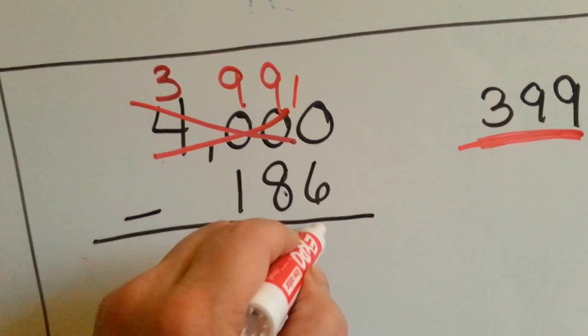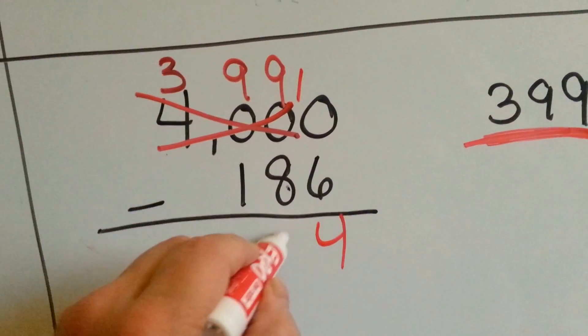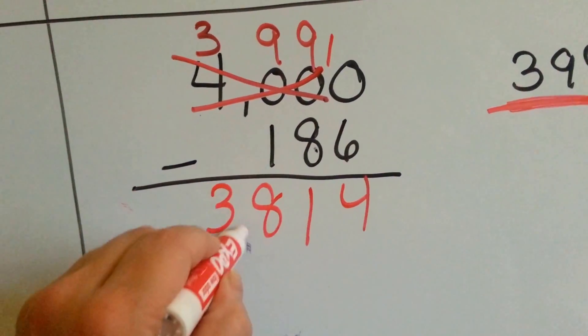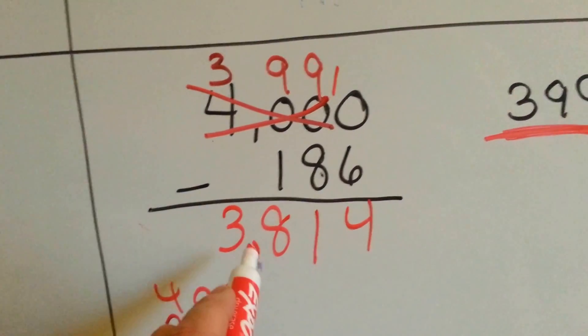Now we can do it. 10 take away 6 is 4, 9 take away 8 is 1, 9 take away 1 is 8, and 3 take away none is 3. And don't forget your comma because we've got a thousands place.